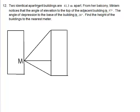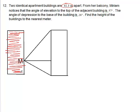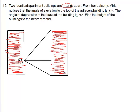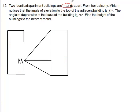So it says two identical apartment buildings are 41.3 meters apart. So 41.3 meters apart. So I'm assuming then this is building 1, right? This is some building and an identical building, building 2. So we have two buildings, right? Now these buildings are 41.3 meters apart. So this would make sense that they're 41.3 meters away from each other.